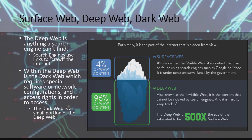But within the Deep Web is what we call the Dark Web. The Dark Web is where bad things can happen — where people can sell, buy, or do illegal things.